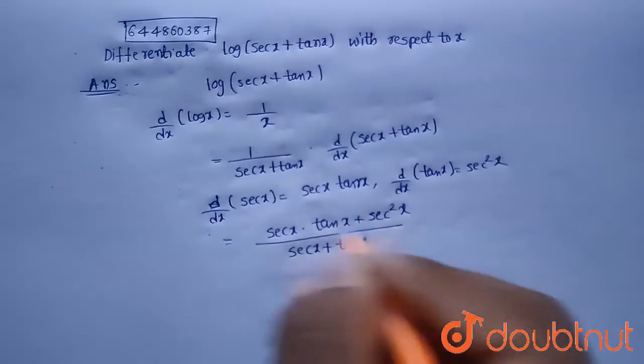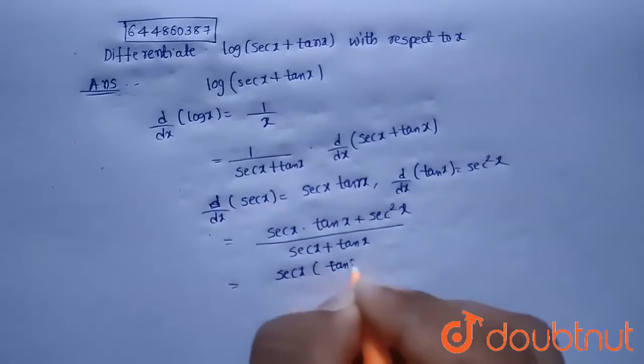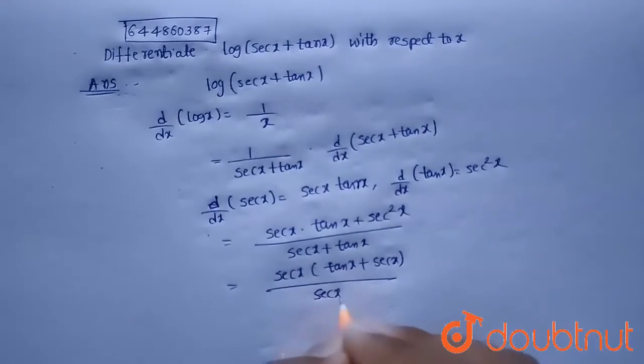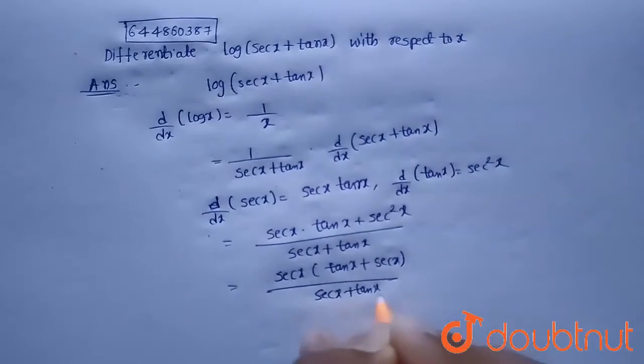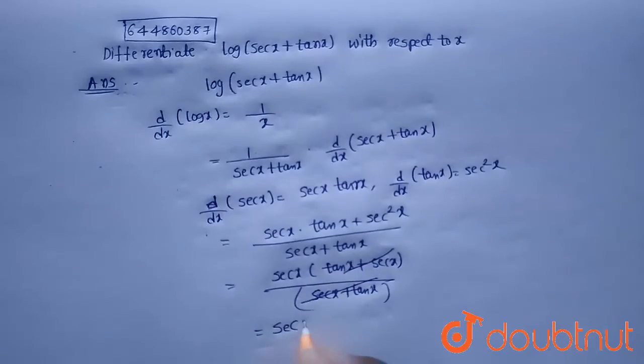Now, I am taking out secant x common from the terms, then tan x plus secant x divided by secant x plus tan x. Now, this secant x plus tan x will get cancelled and we will get secant x.